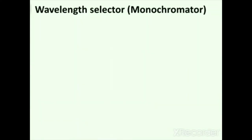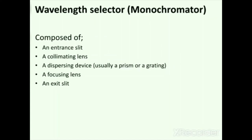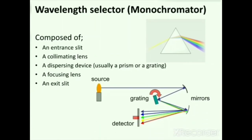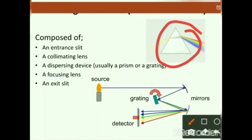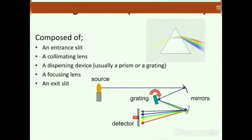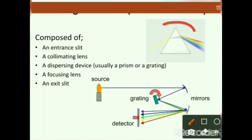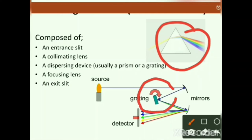The wavelength selector, also known as the monochromator, is composed of an entrance slit, a collimating lens, a dispersing device, a focusing lens, and an exit slit. Dispersing devices are of two types: prism and grating. Prisms are made of glass, quartz, or silica — though glass is avoided because it absorbs electromagnetic radiation. Gratings are made of aluminum, and the dispersing power of a grating is greater than that of a prism.